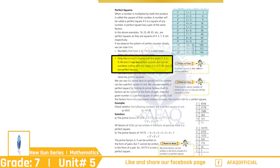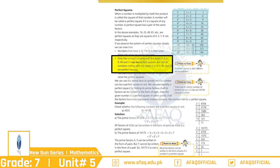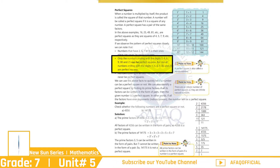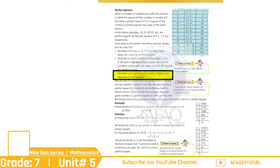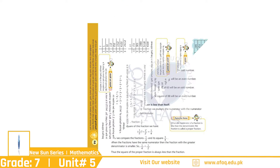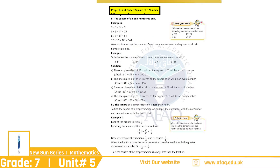وہ نمبر جن کے آخر میں 1، 4، 6، 9، 00 یا 25 ہو گا، وہی Perfect Squares ہو سکتے ہیں، لیکن تمام نمبر نہیں۔ تیسرا: وہ نمبر جن کے آخر میں Odd Numbers of Zeros ہوں گے، وہ کبھی بھی Perfect Squares نہیں ہو سکتے۔